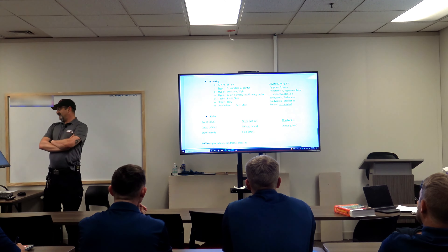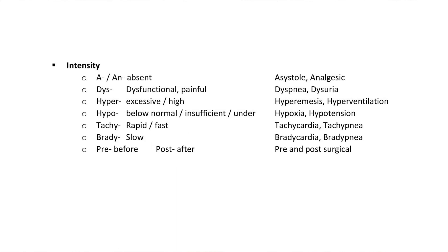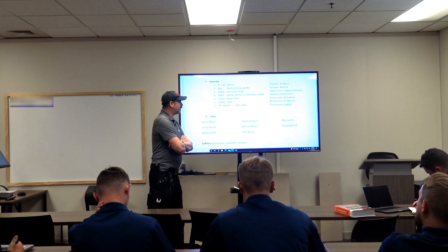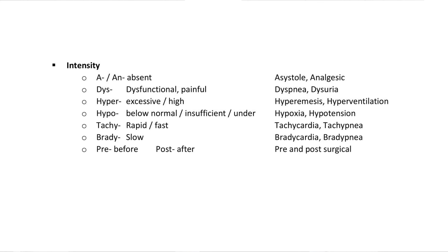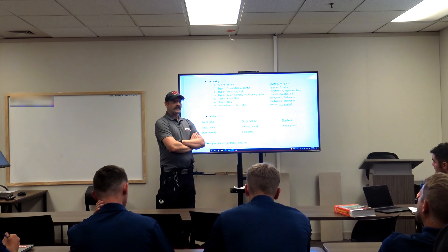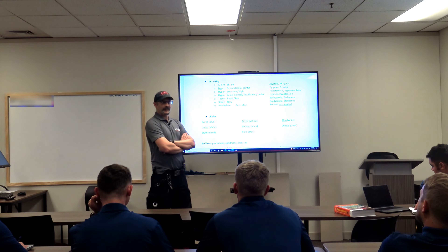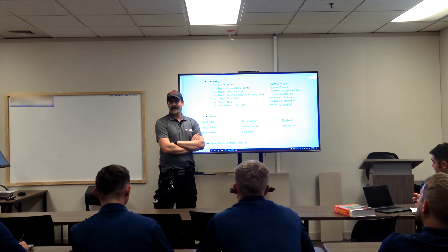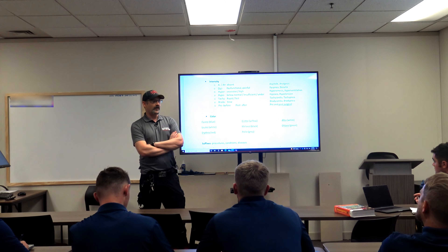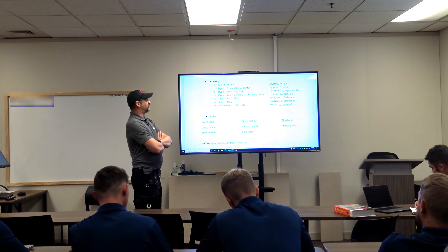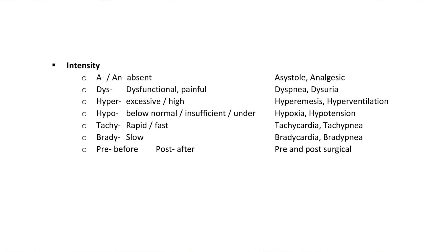Prefixes can also indicate the intensity of a function — how well it's actually performing. If we put 'a' or 'an' before a root word, that means absence. Asystole — systole is the contraction of the heart muscle, so asystole means it's not doing anything. That's your flat-liner: no heartbeat, no electrical activity. Asystole means cardiac arrest — the heart is not moving, not pumping, not doing anything.